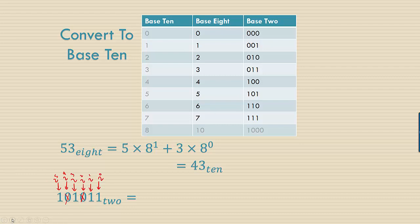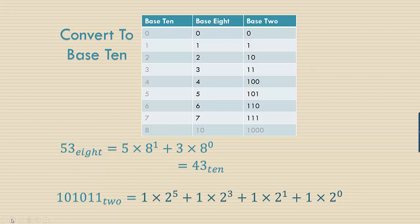So what we actually end up doing is adding 1 times 2 to the 5th plus 1 times 2 cubed plus 1 times 2 to the 1st plus 1 times 2 to the 0. Now 2 to the 5th is 32, 2 cubed is 8, 2 to the 1st is 2, and 2 to the zero is 1, which equals 43. So it turns out that these two numbers are the same value when we convert them to base 10.